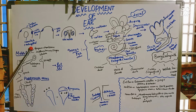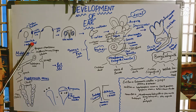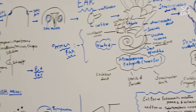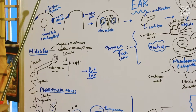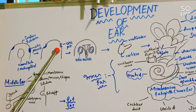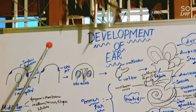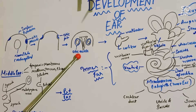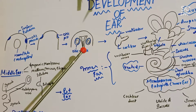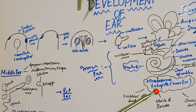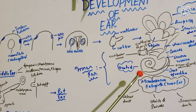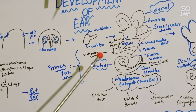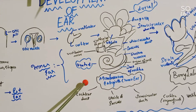Here is the neural tube of the metencephalon part, that is of the hindbrain. The surface ectoderm surrounding it has a thickening called the otic placode. The otic placode converts to the otic pit, and the otic pit into the otic vesicle. From the otic vesicle, the membranous labyrinth is formed. The membranous labyrinth is of the inner ear.